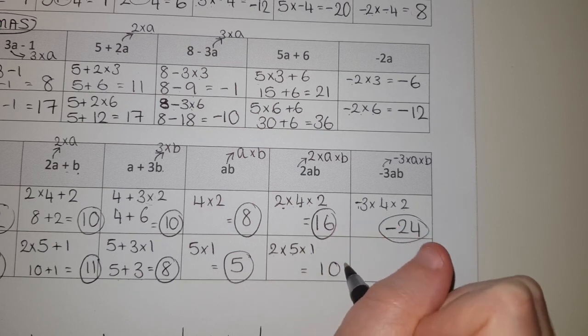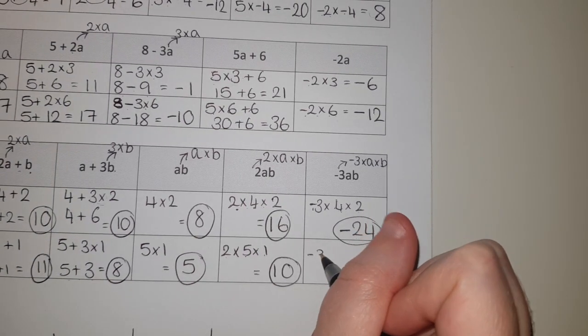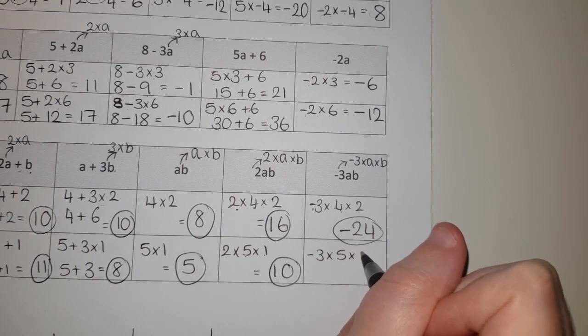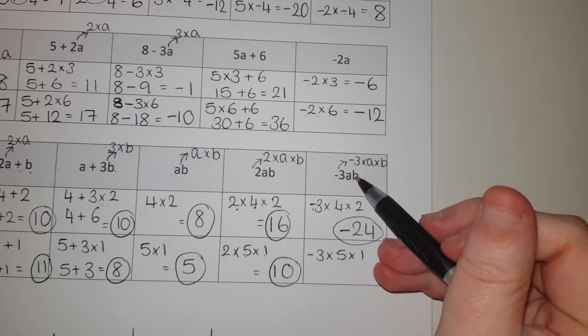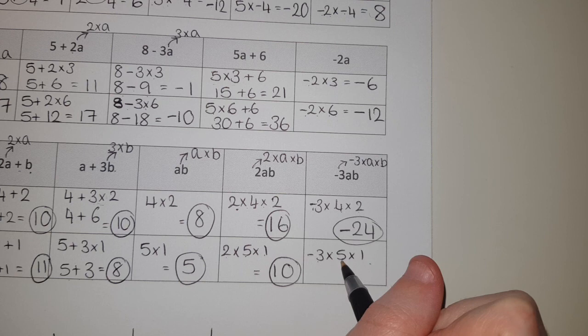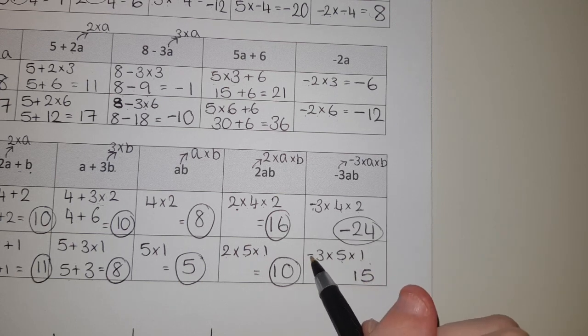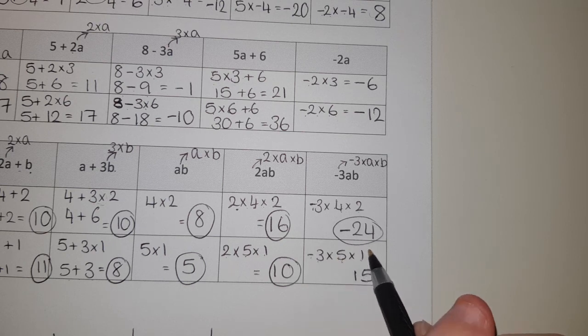And then last question. Again, be very careful with your negatives. So I swapped A for five and B for one. So three times five is fifteen, times one is still just fifteen. A negative times a positive means so far I'm negative. Times a positive again is still negative. So I get minus fifteen, and that's it done. Those are all of our examples.